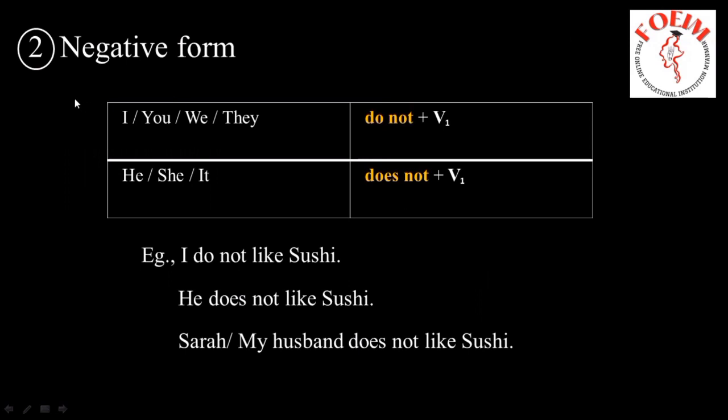The next one is the negative form. For I, you, we, they — we use 'do not' plus the base form of the verb. For he, she, it — we use 'does not' plus the base form of the verb.